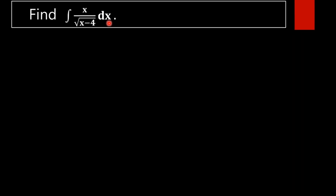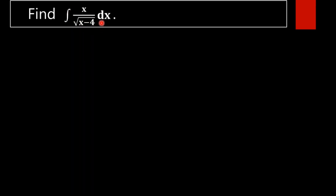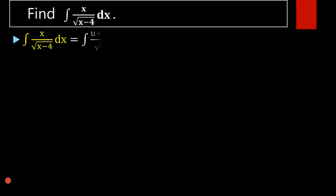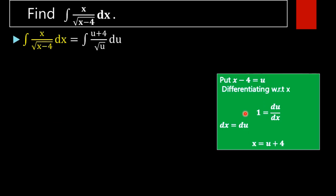This square root of x minus 4 is the problem. In order to make this function into an integrable form, we are taking x minus 4 equal to u. We are going to substitute x minus 4 equal to u, then on differentiating with respect to x, we will get d by dx of x minus 4, that is d by dx of x minus d by dx of 4, which equals 1 minus 0, equal to du by dx, which implies dx equal to du.